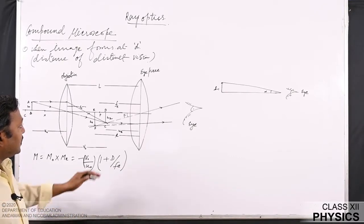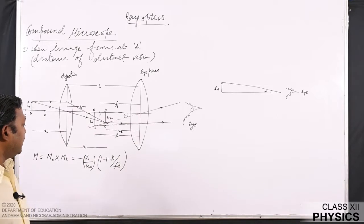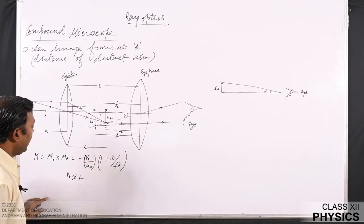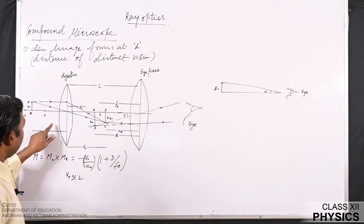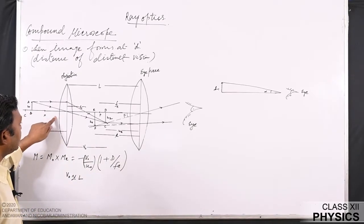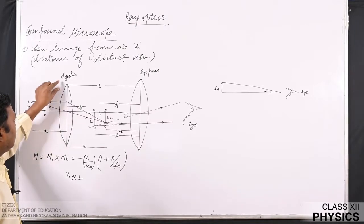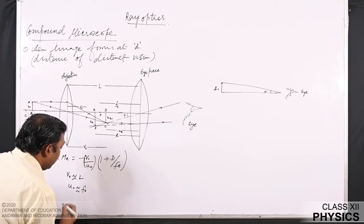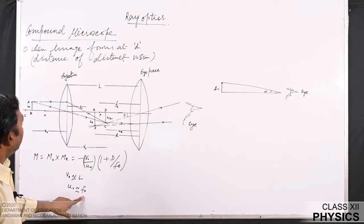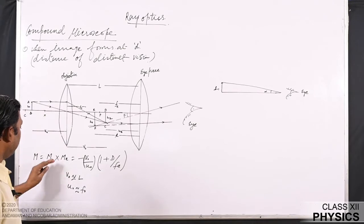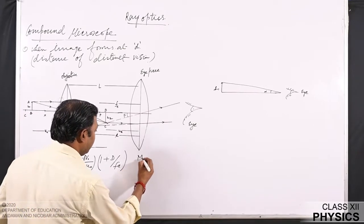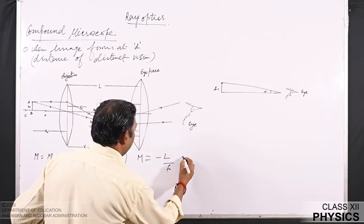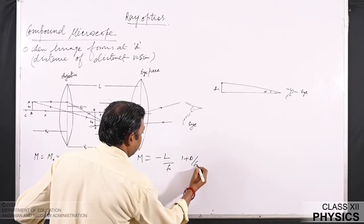If the image is formed nearer to the second lens, that is at the eyepiece, then v₀ can be taken as approximately equal to l. And if the object is placed nearer to the focus point of the first lens, that is the objective, then u₀ can be approximately taken as f₀, where f₀ is the focal length of the objective lens. The magnification then becomes m = −l/f₀ × (1 + d/fₑ).